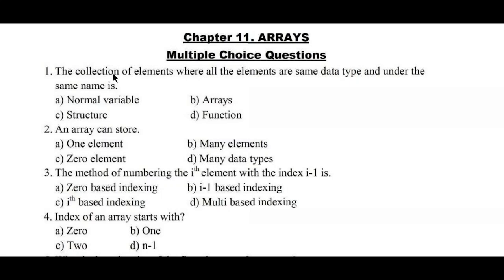Question number one: the collection of elements where all the elements are the same data type and under the same name. Options: a) normal variable, b) arrays, c) structure, d) function. Collection of all elements of the same data type under the same name are called arrays, so option b is the right answer.